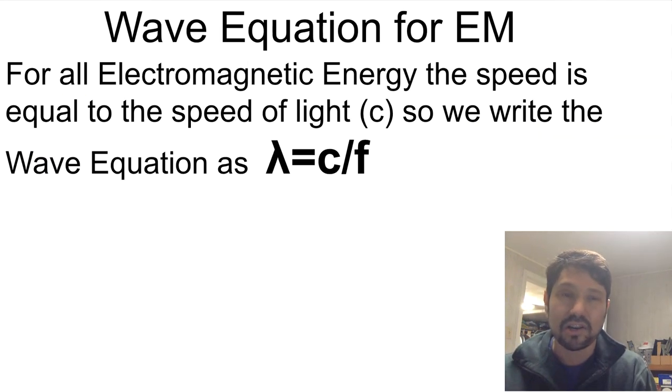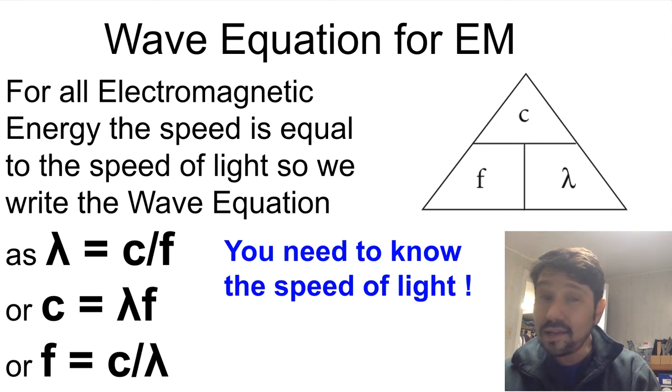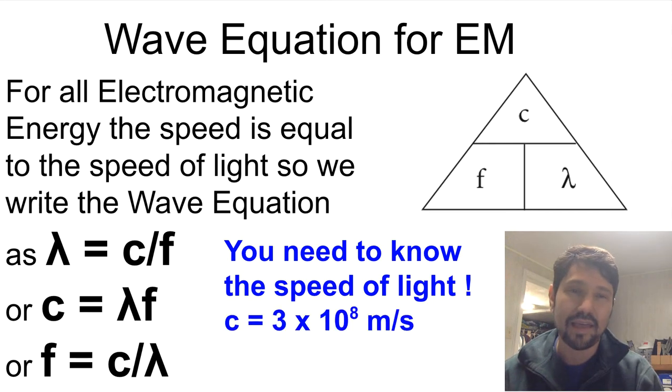The good news is a lot of our problems are going to be electromagnetic energy and the velocity is going to be the speed of light, so you're only going to either solve for wavelength or solve for frequency. The wave equation can now be written as wavelength equals speed of light divided by frequency, or c = λf, or f = c/λ. The speed of light is always going to equal the wavelength times the frequency. And you'll need to know the speed of light to solve these problems and that number is 3×10⁸ m/s, so add that to the numbers you need to memorize.